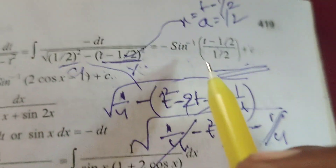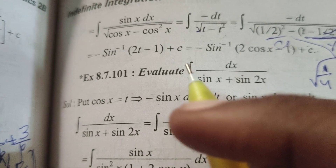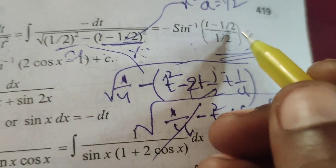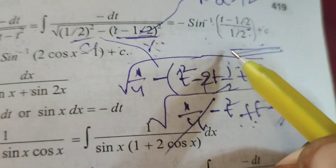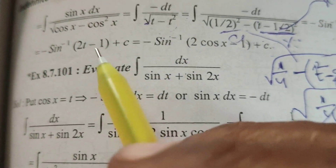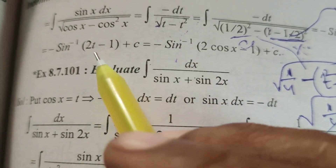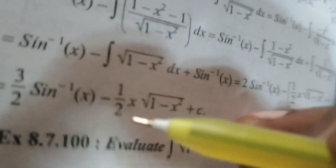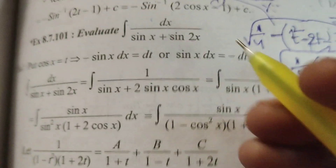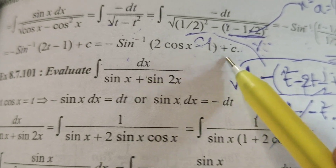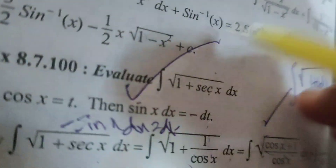Now back-substituting t equals cos x: simplify 2t minus 1 divided by 2 — the 2 gets cancelled — giving 2t minus 1. Therefore the final answer is minus sine inverse of (2 cos x minus 1) plus C. This is the evaluated integral. Thank you.